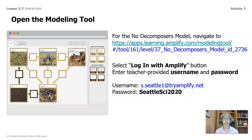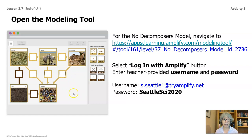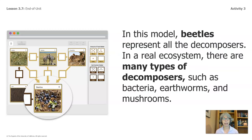For the no decomposers model, you'll navigate to this URL. I know it's rather long, so if you have a phone handy you can take a picture of it, or pause the video and write it down — it's the way to get to this modeling tool through the Amplify curriculum. You'll use this username and password, just like you did in the last lesson. If a computer is not available, there is a cutout in your packet so you can cut the different pieces out and move them wherever you'd like. In this model, beetles represent all the decomposers. In a real ecosystem, there are many types of decomposers, such as bacteria, earthworms, and mushrooms.